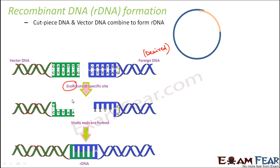Once EcoRI finds its recognition sequence, it cuts between G and A on both strands — here, and here, and again here and here. As a result, two pieces are formed: one piece GCTTAAG and the other AATTCG. Similarly, the foreign DNA is cut into its respective pieces. Only the upper piece is shown here for clarity.